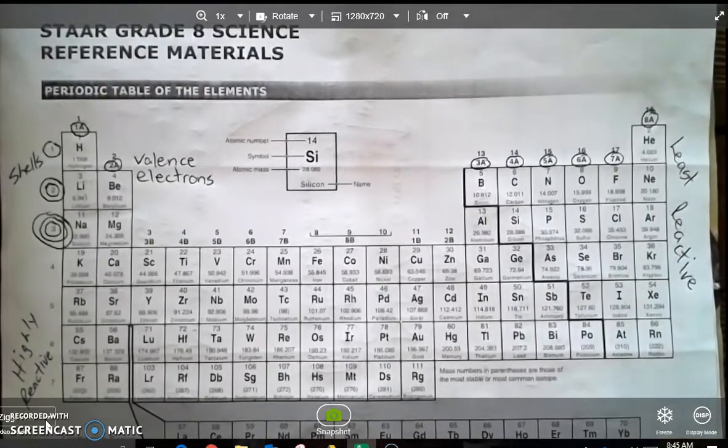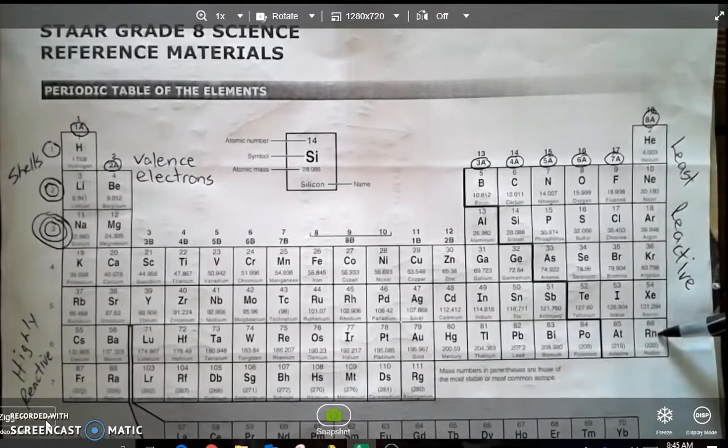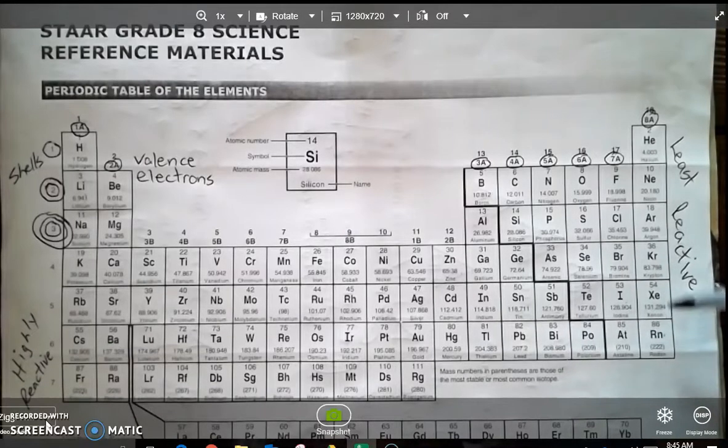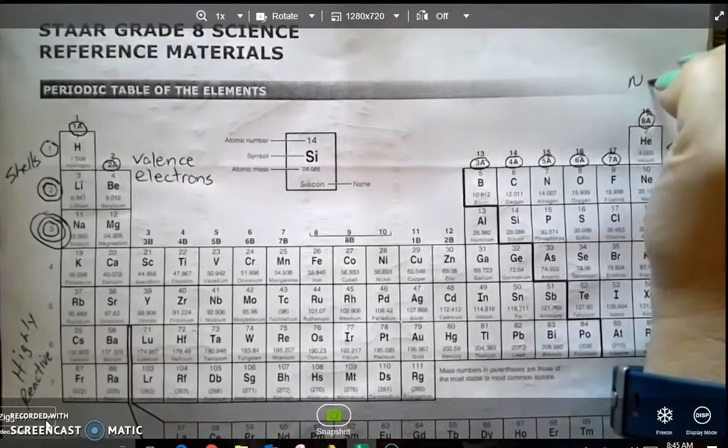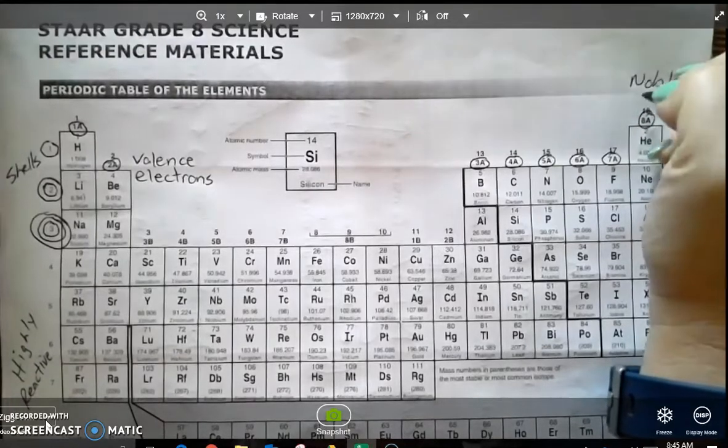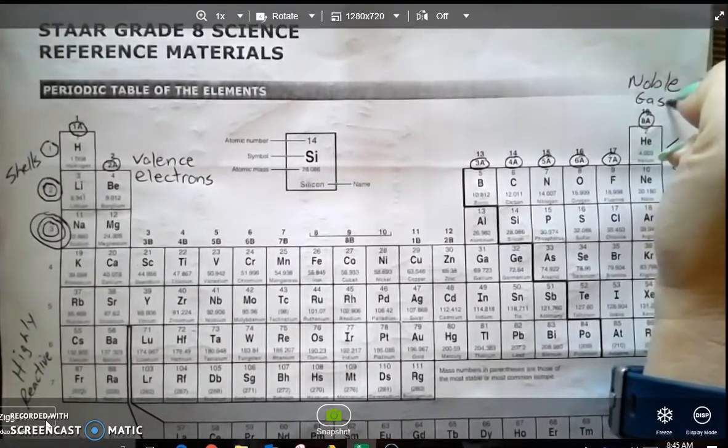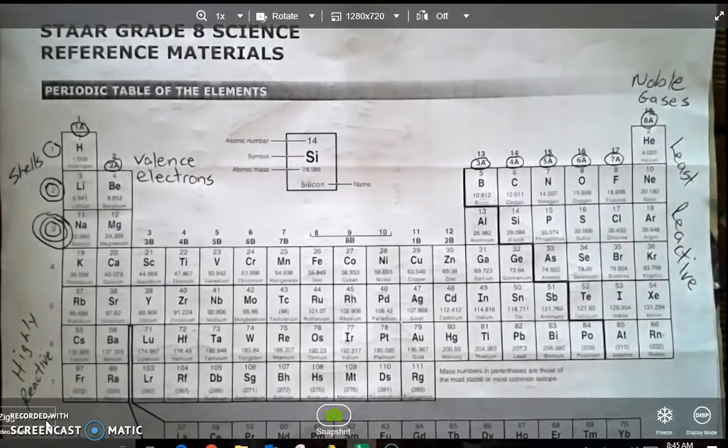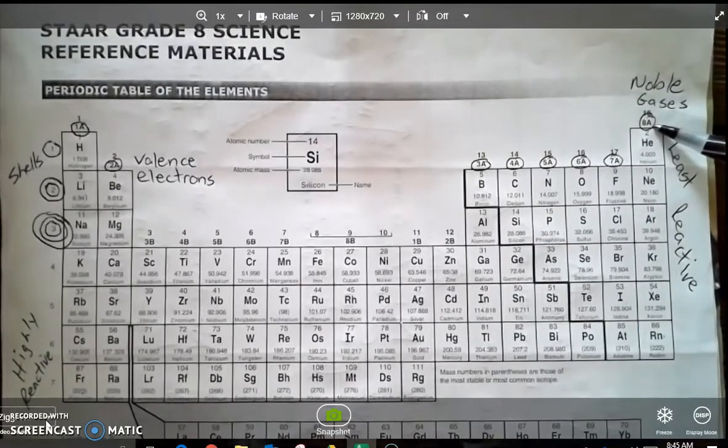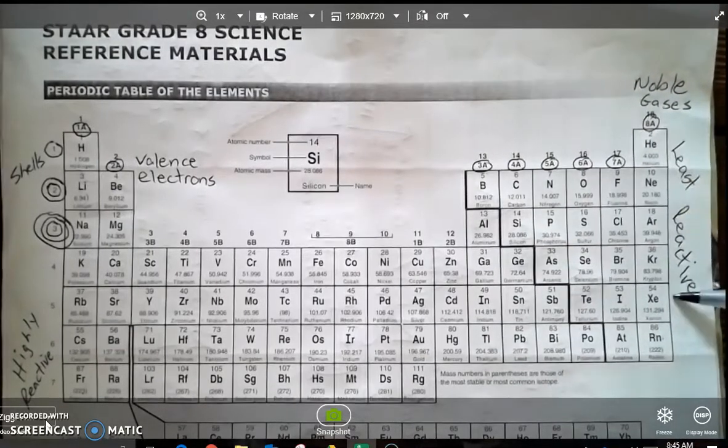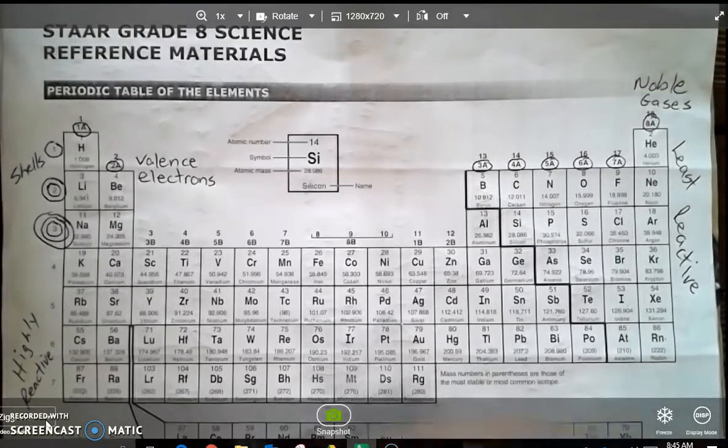And then we also will look real quick while we're here at the noble gases column. Noble gases are noble, like kings and queens. They do not need to react with anything. So we call them full because they have 8 valence electrons. They are the least reactive column within the group system.